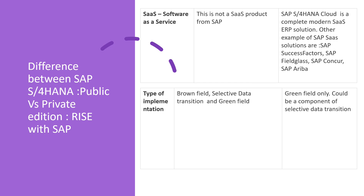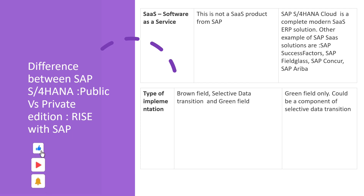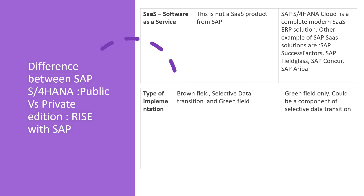Regarding implementation: in private edition you can do brownfield implementation, greenfield implementation, or selective data transition — all options are available. In public edition, you can only do greenfield implementation, and selective data transition for certain components may also be possible.